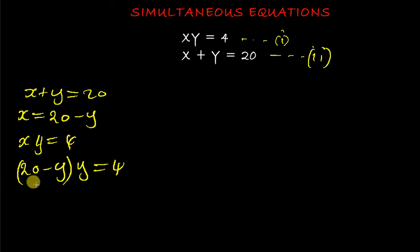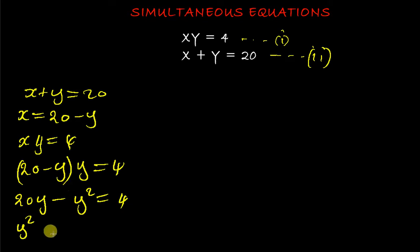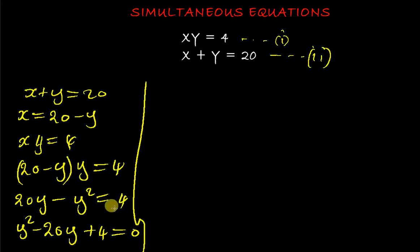We multiply through: y × 20 gives 20y, and minus y × y gives y squared, so 20y − y² = 4. Taking everything to one side of the equal sign gives us y² − 20y + 4 = 0. Now we solve this quadratic equation.